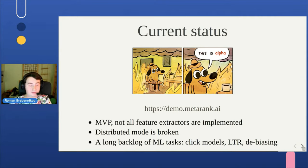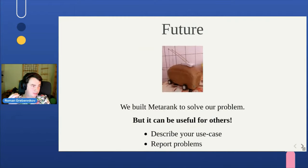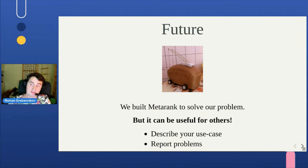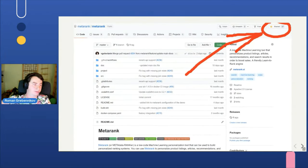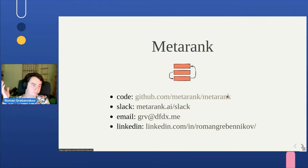The current status of Metarank is alpha. We're still using it for some projects. We have a demo available — you can click around, though don't crash it. We have a large backlog of things to implement, but we built Metarank to solve our own problems so we don't reinvent the wheel on the next project. We think it can be useful for other people too — star us on GitHub, play with the tool, talk to us, describe your use cases, and help us develop it if you feel it can work for you. That's it — thank you very much.